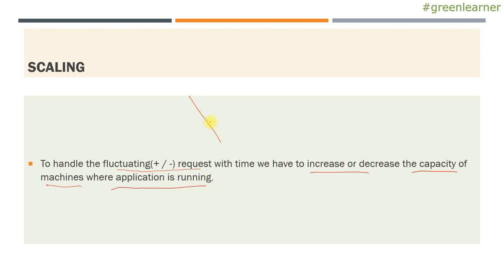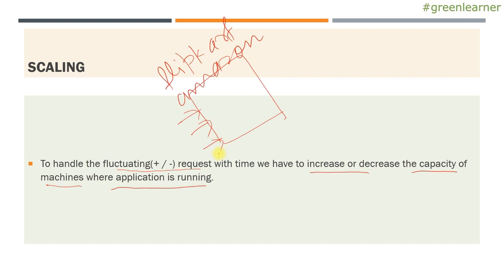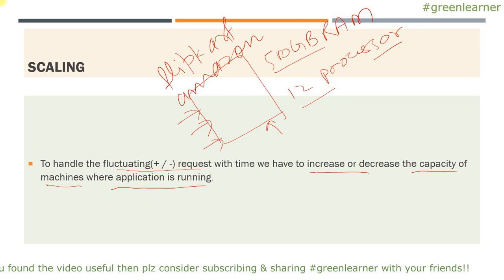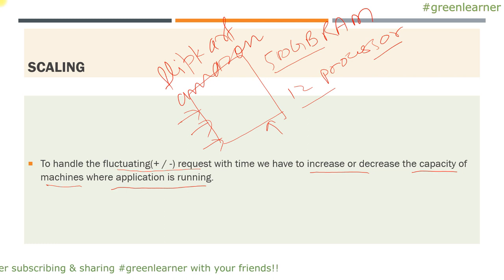If I take an example of Flipkart or Amazon — retail websites — they have certain times, peak seasons on festival times or when they have sales, where the load on their websites increases dramatically. So when their app is running on a single machine with some configuration, say 500 GB of RAM and some processors, that is the existing configuration. When sale time or festival time comes, the load is going to increase dramatically. Is it possible that 500 GB and 12 processors are going to handle that load? No. That is why you may have seen news or faced the scenario where their website is down — even Facebook, Google, or Flipkart Amazon face this situation.